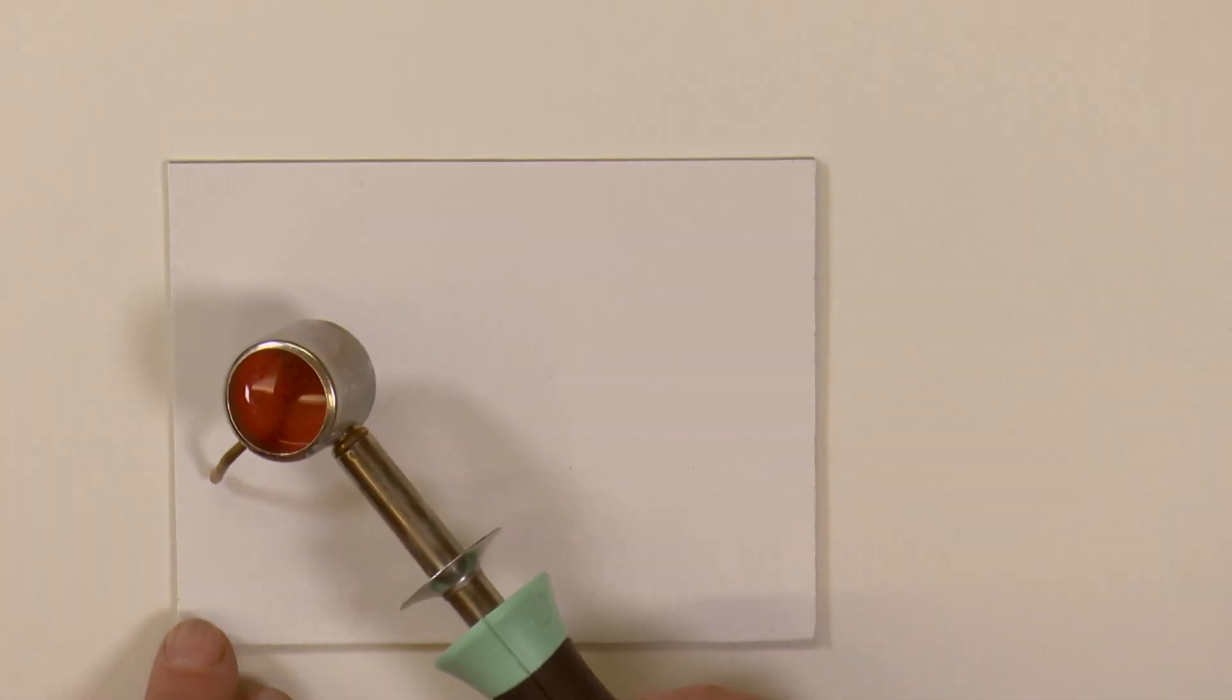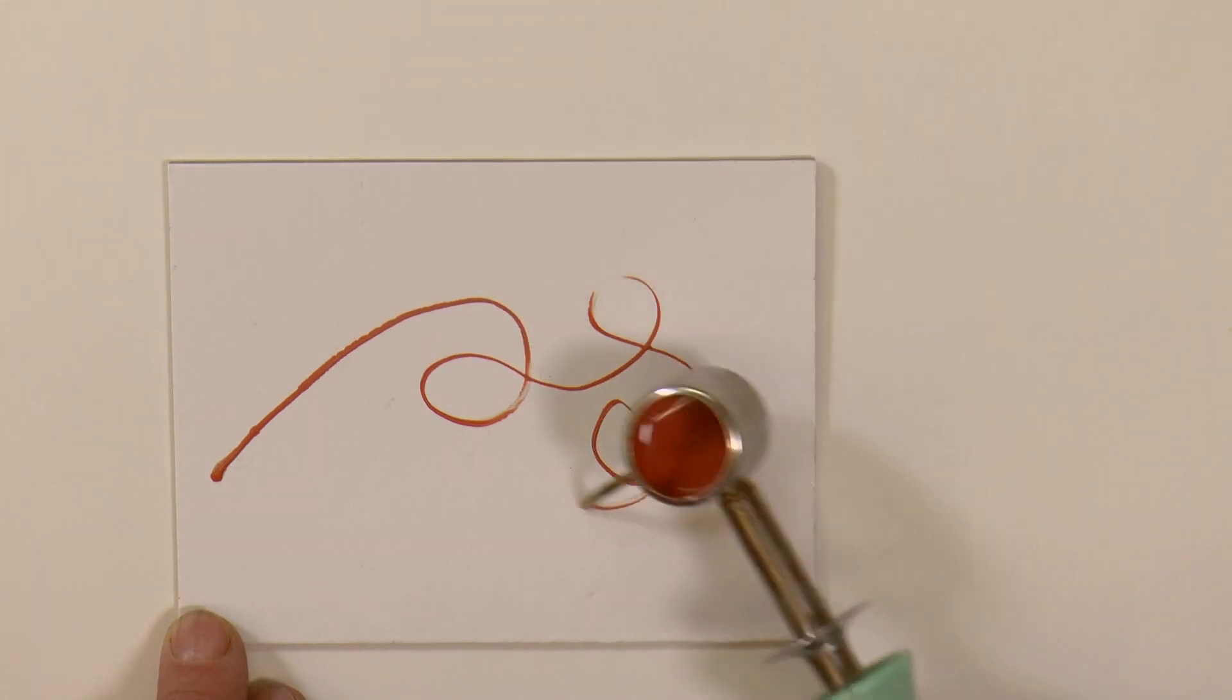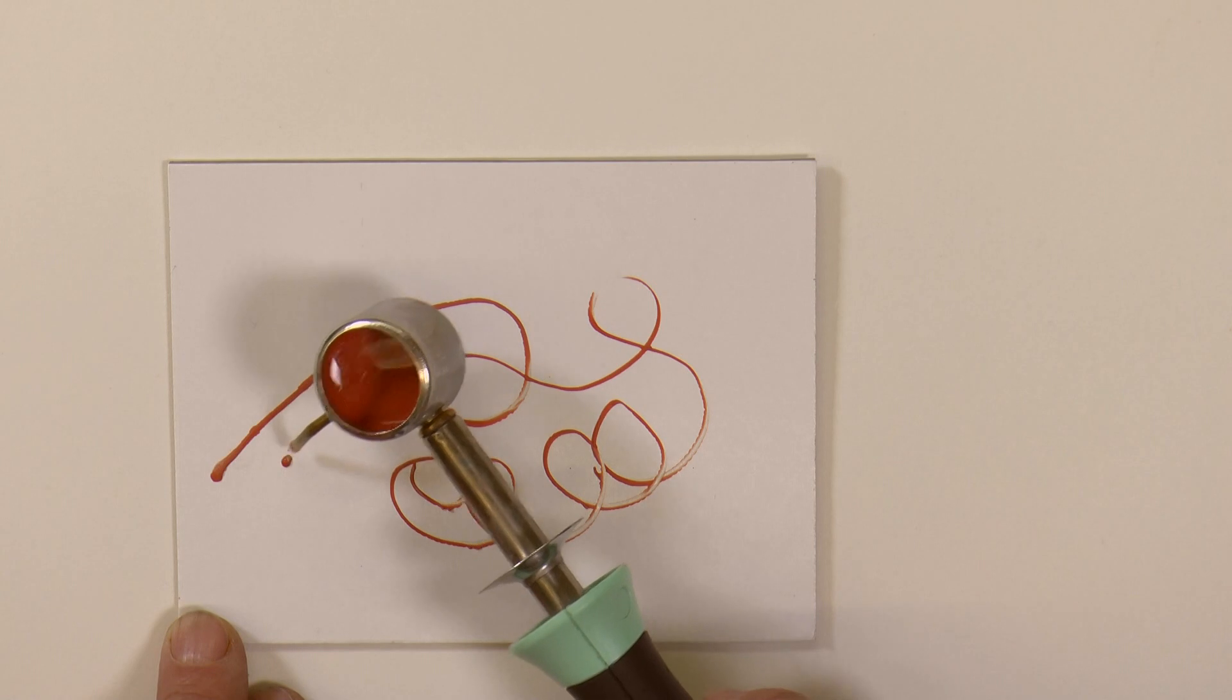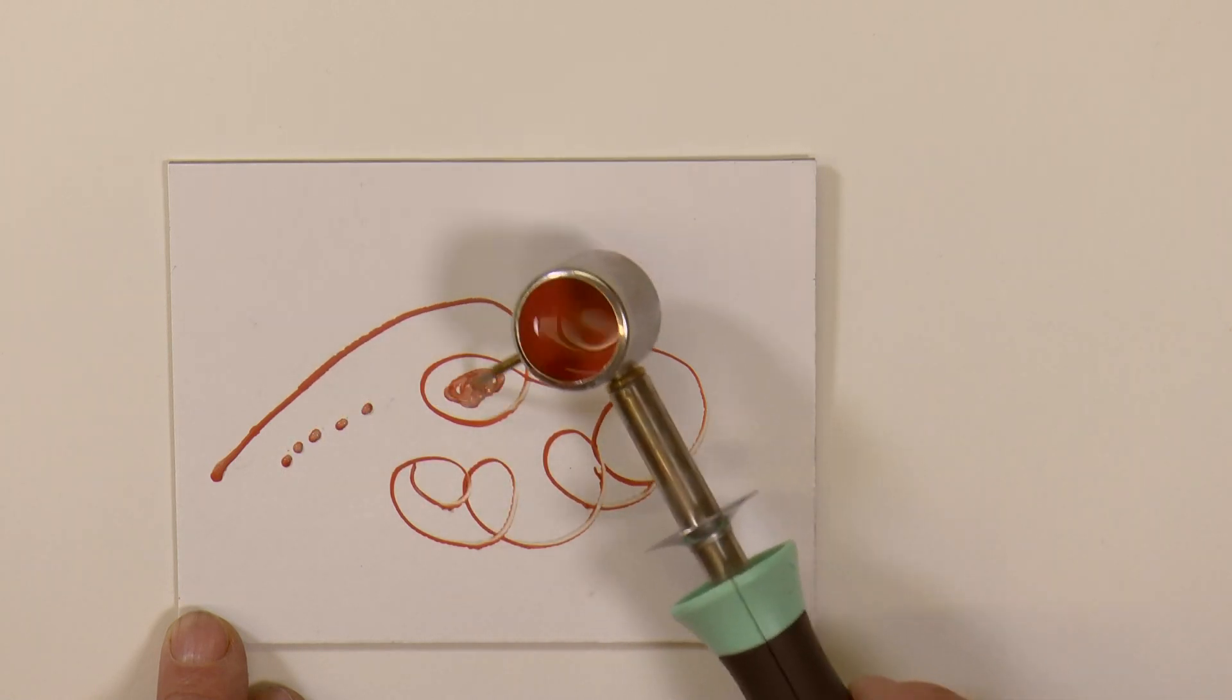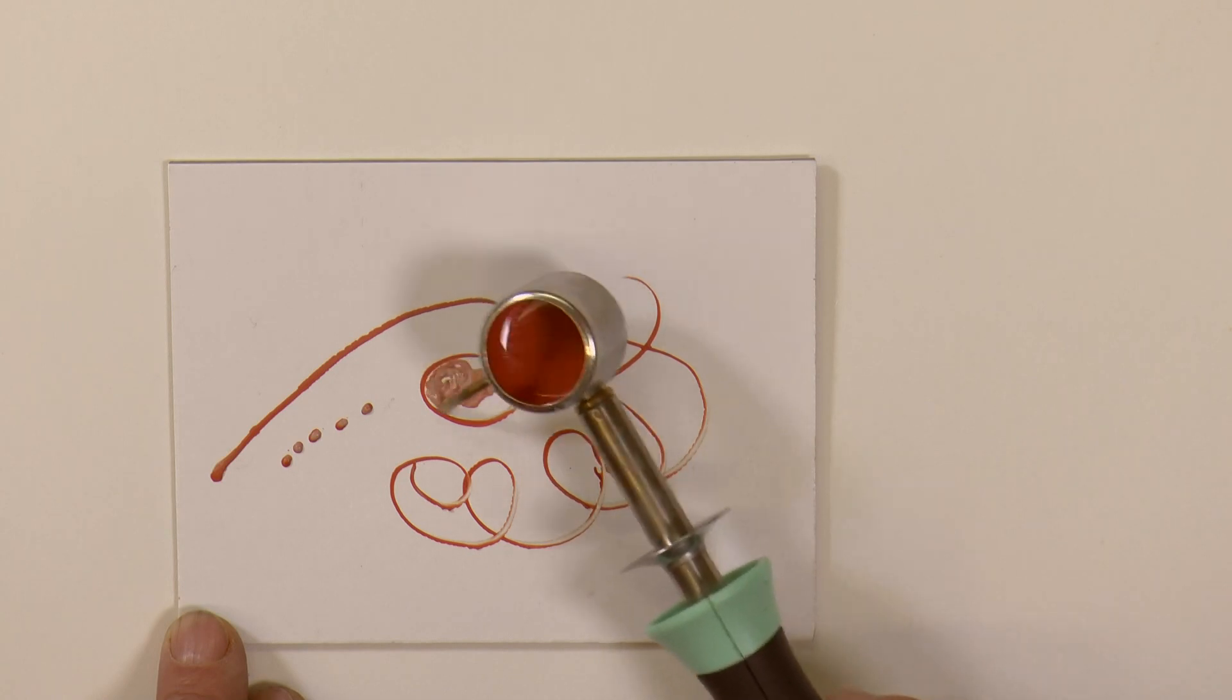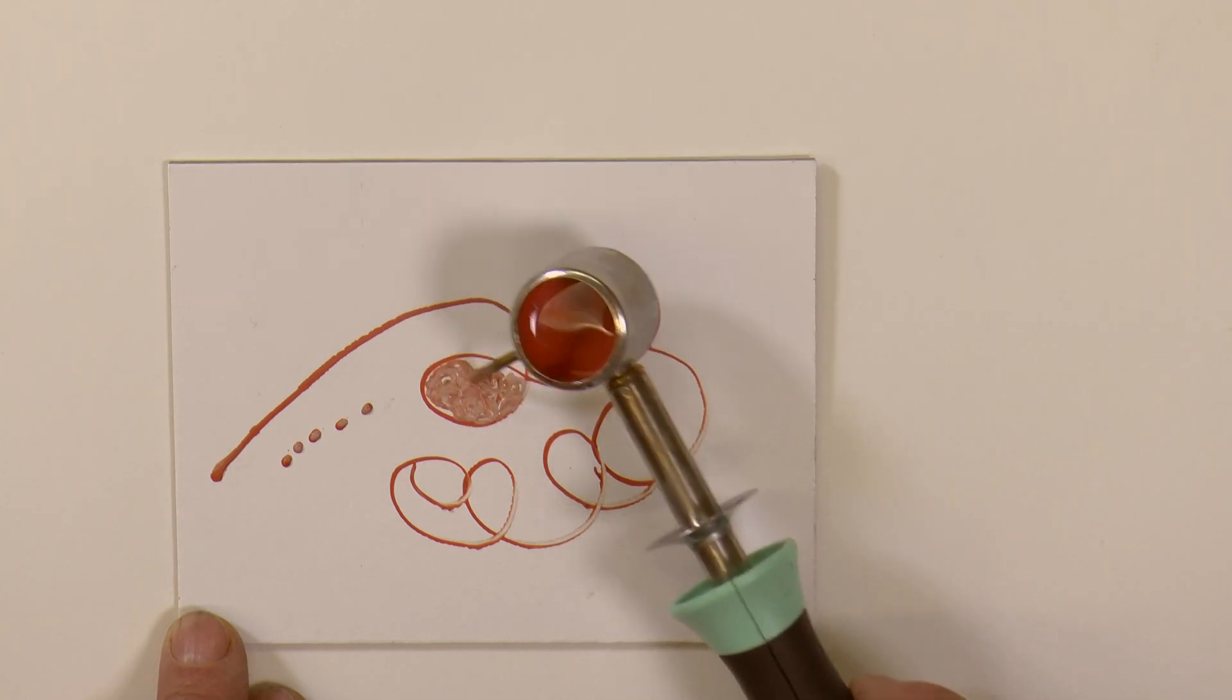Once molten, just apply the tip of the pipe and set off. Fluid lines are very simple. Spots are easy. And filling areas is quite straightforward as the wax flows out whilst you move that tip around.